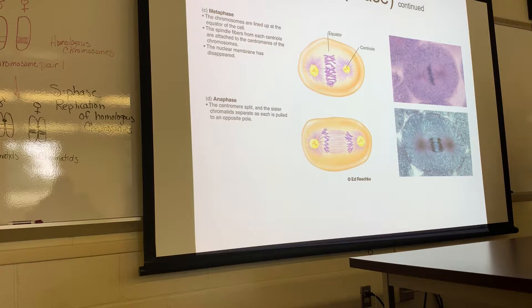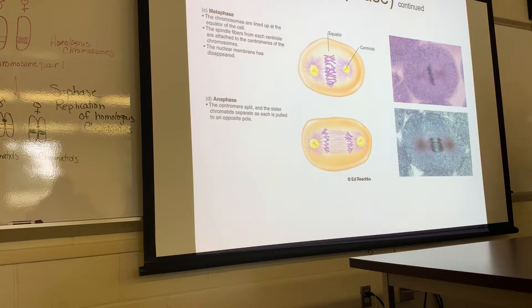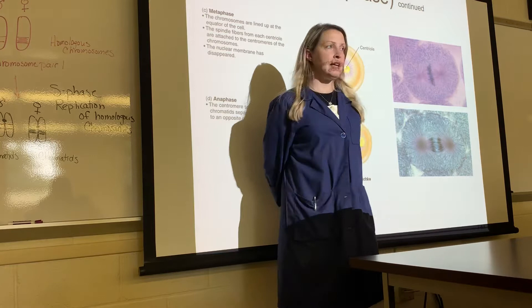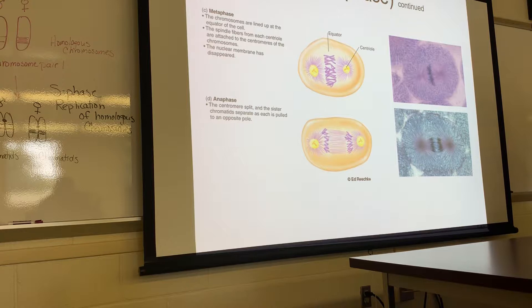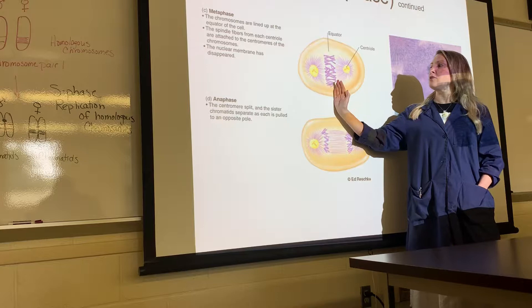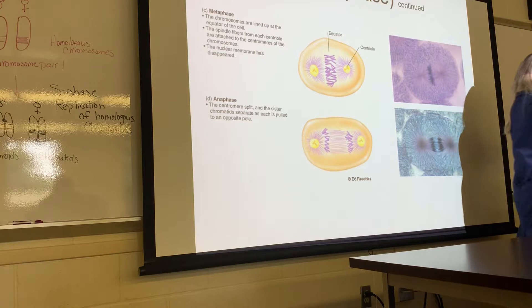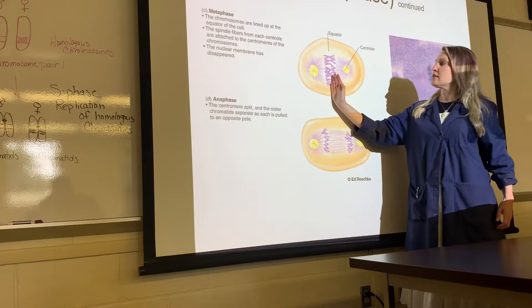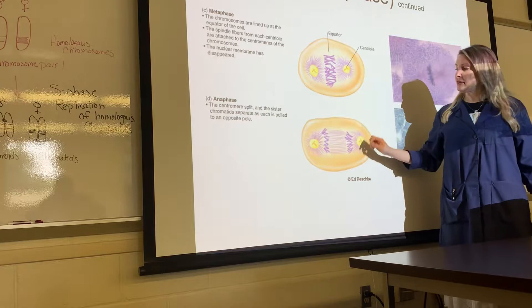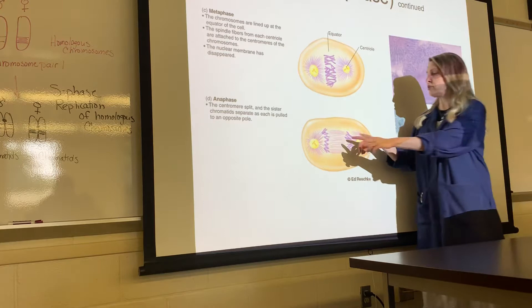Then we enter metaphase — the second phase of mitosis. One major thing happens in metaphase: the sister chromatids are arranged in the middle of the cell, known as the equator, which divides it into an upper and lower portion. In anaphase, one major thing happens: the microtubules start to shorten and pull the sister chromatids to opposite sides of the cell.